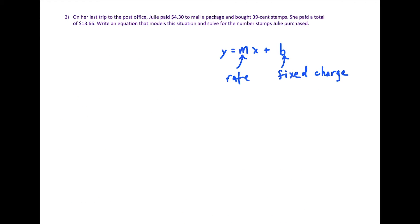Okay, for question two, it's the same idea, but take a second to read through this. Now we have Julie at the post office and she paid $4.30 to mail a package and bought 39 cent stamps. We have the total for her bill and we want to write an equation that models this situation and solve for the number of stamps that Julie purchased.